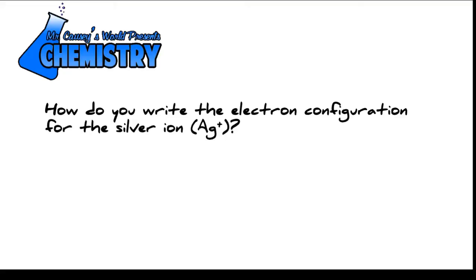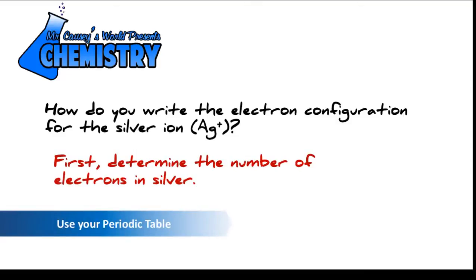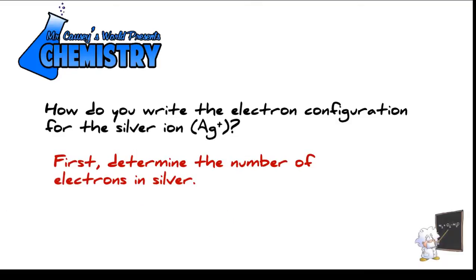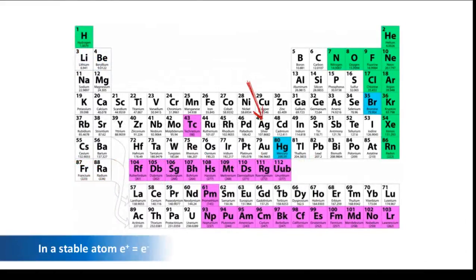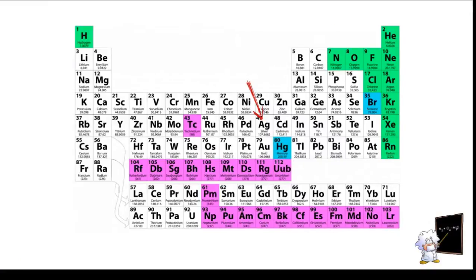How do you write the electron configuration for the silver ion, Ag+? Well first let's determine the number of electrons in silver. So let's go to the periodic table, and at the periodic table we'll see that silver has 47 electrons.